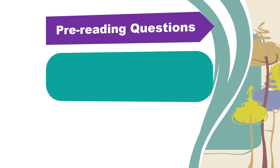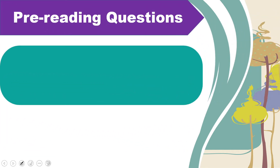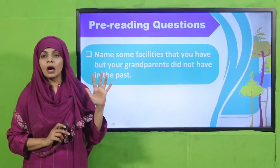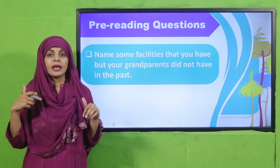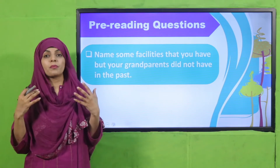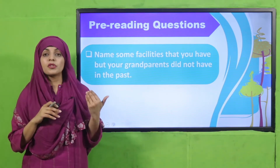Now the pre-reading question: name some facilities that you have but your grandparents did not have in the past. Examples include televisions, mobile phones, computers, cars, and air conditioners. These are some facilities which were not present in the past or which our grandparents did not enjoy.